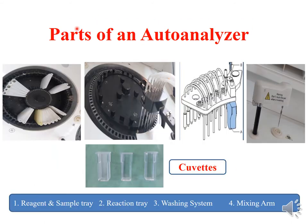Looking at the parts of the auto-analyzer, the first wheel is known as the sample wheel or sample tray. On the periphery there are small slots for keeping the samples, and you can see two sample cups are also kept here.